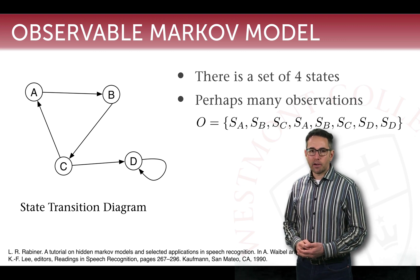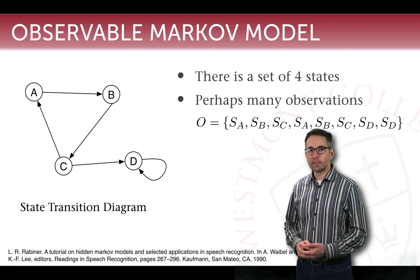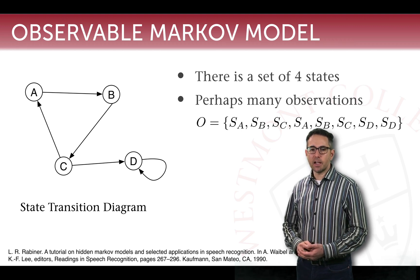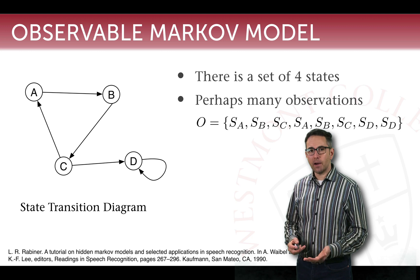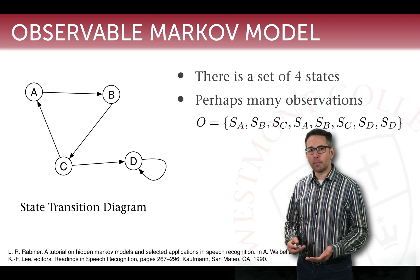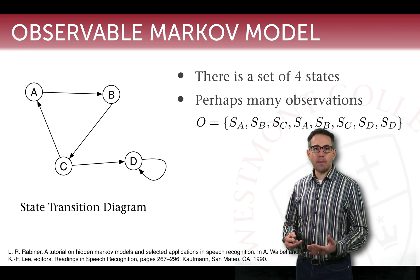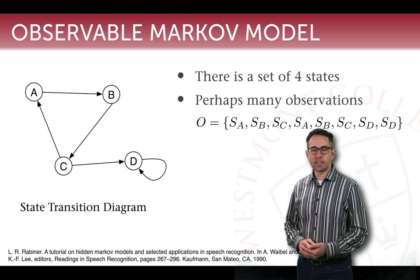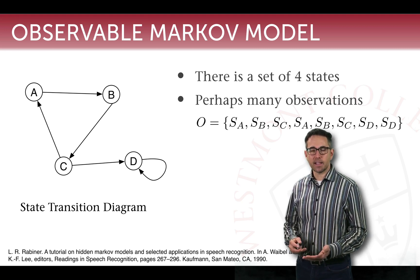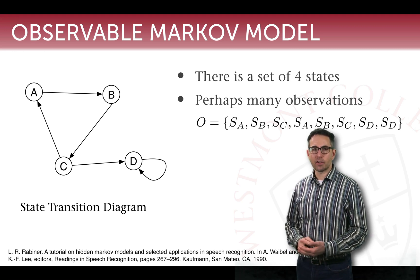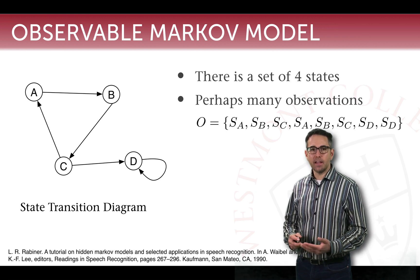The final thing required to define an observable markup model is the probability of starting in a particular state. This state transition diagram gives us a lot of information about an observable markup model. It has four states, and we might get a sequence of observations like state A, state B, state C, moving in a circle, then going to A again.